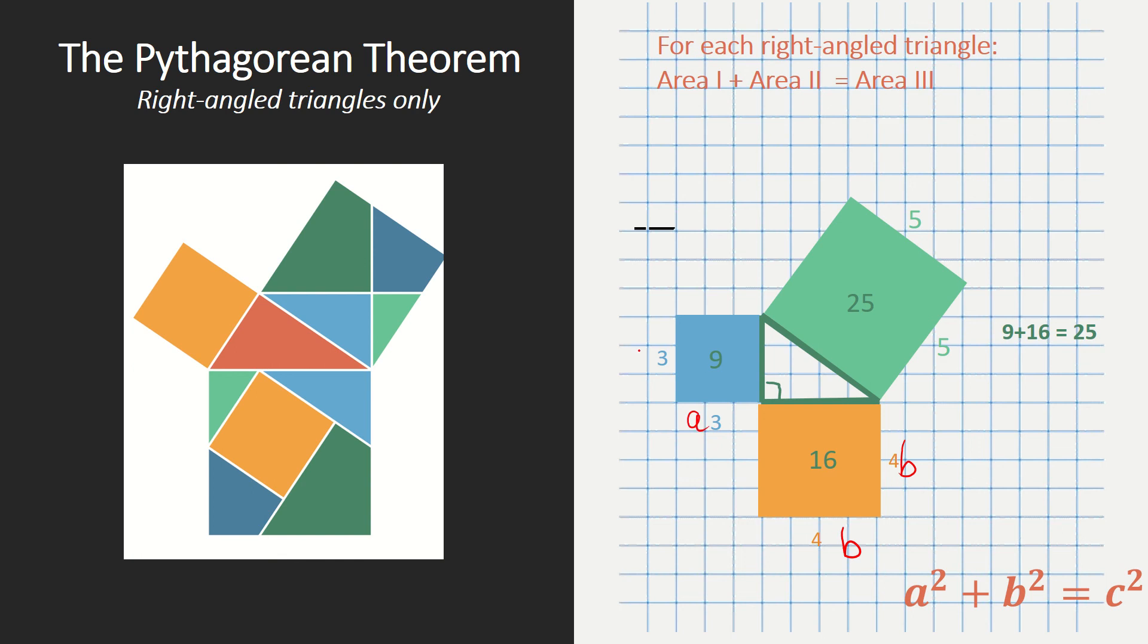We could call this one a, and that one as well. And then this is c. So the area is a squared plus b squared equals c squared. And that's how we can formulate the Pythagorean Theorem rule.